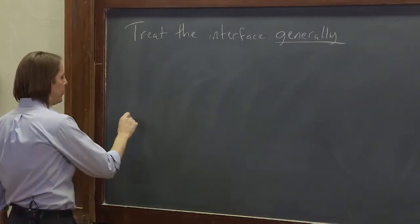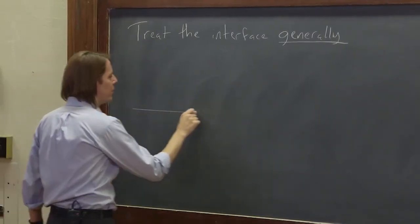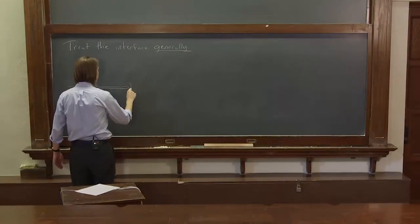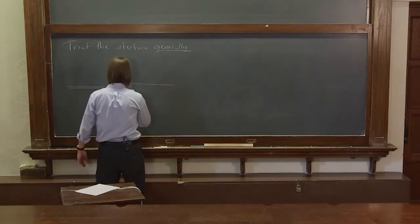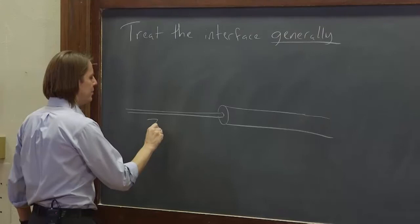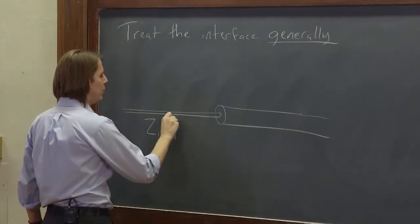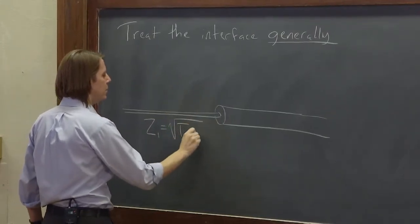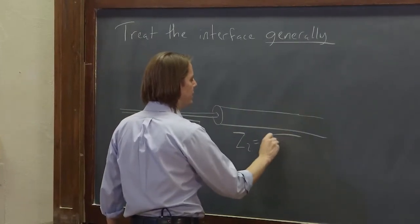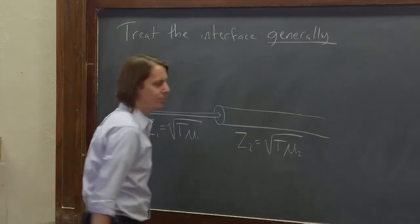Okay, so let's draw our interface first. So we have our thin string here, and it is somehow connected to our thicker string here. And this has impedance z1, which is the square root of tension times mu1. And this is z2, which is the square root of tension times mu2.